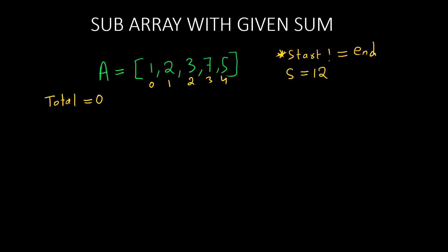Welcome everyone to the question 'Subarray with Given Sum' from the topic Array on GeeksforGeeks — a must-do coding interview question. In this question, we are given an array A and we need to find the starting and ending index positions where the sum between those positions equals the value S. If it is equal, we return the position values. The index values are converted to positions by adding one, so the output gives us the starting and ending positions.